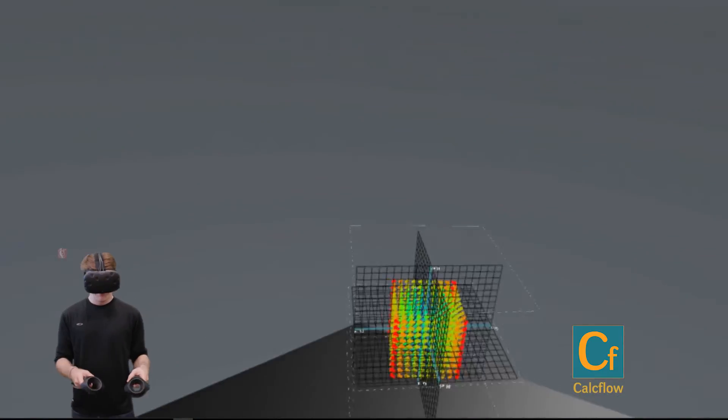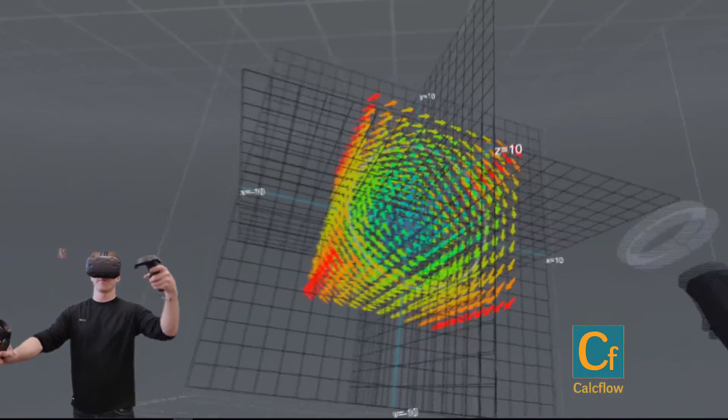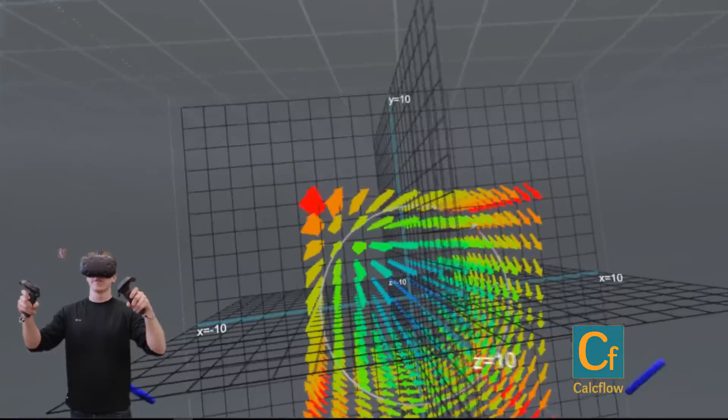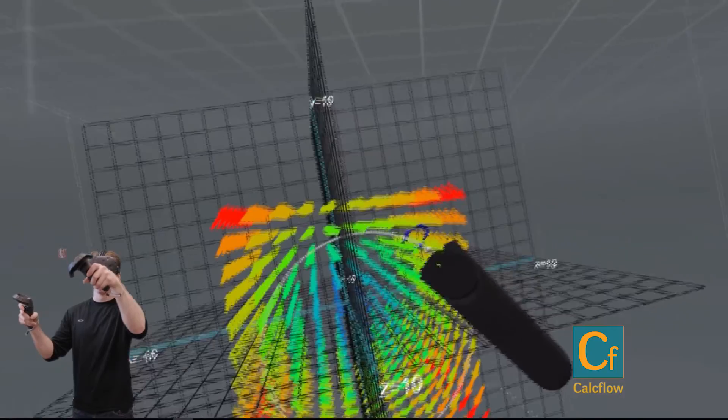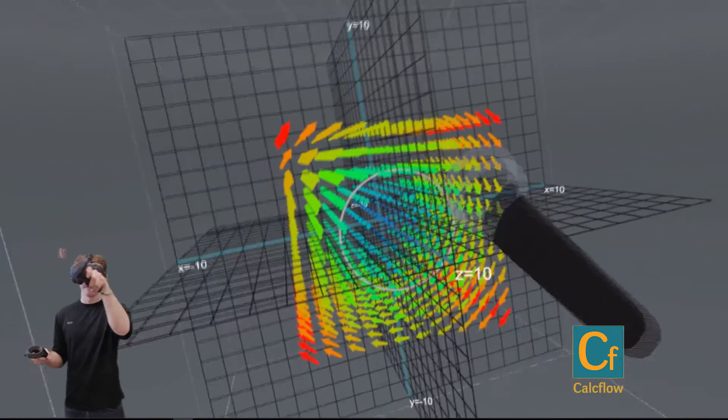Let's do a vector field. So right here we see a vector field. Within this vector field, if you were to place a particle within it, the particle would go on a circular path.